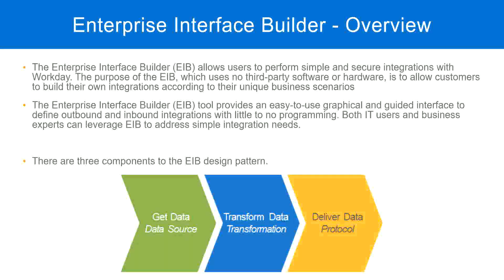When we create an integration using EIB, we will see these three steps: get data, transform data, and deliver data. These are the three components in an EIB design pattern. We configure where to get the data from, whether transformation is needed, and how to send the data to an external system. Once we configure these three steps, our EIB is ready and we can start exchanging information between Workday and an external system.